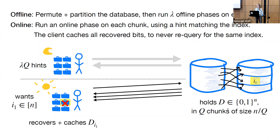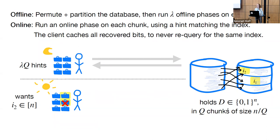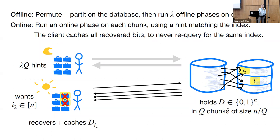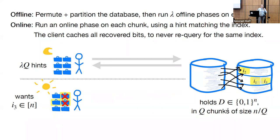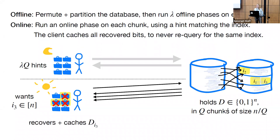Now say our client wants to read some second database index i2 — it can proceed exactly analogously, make the same online queries, and get back an answer which lets it recover database index i2. The same thing happens when our client wants to read database index i3.